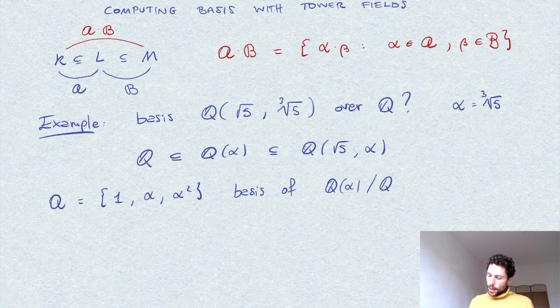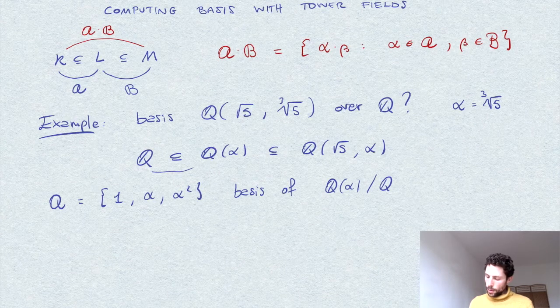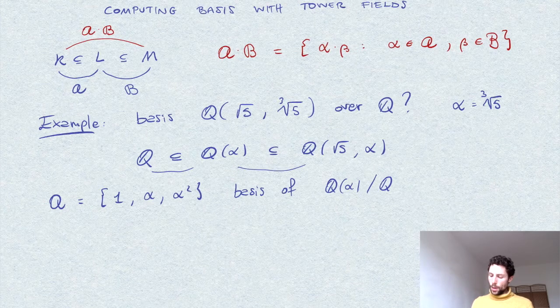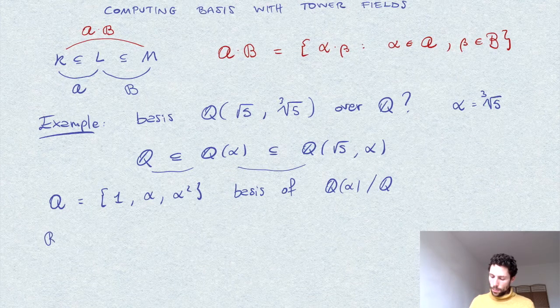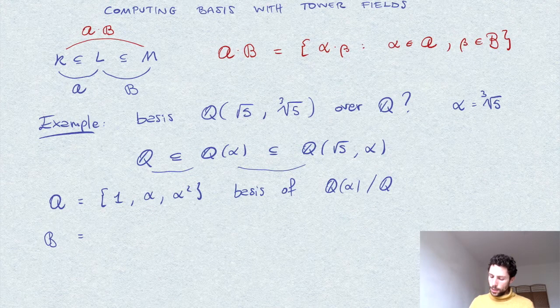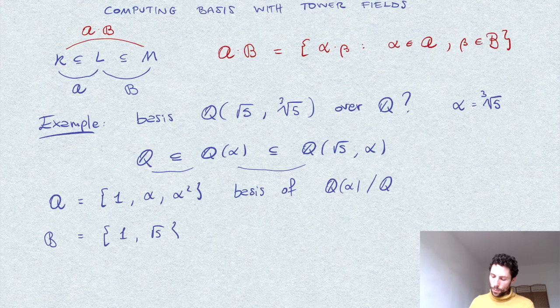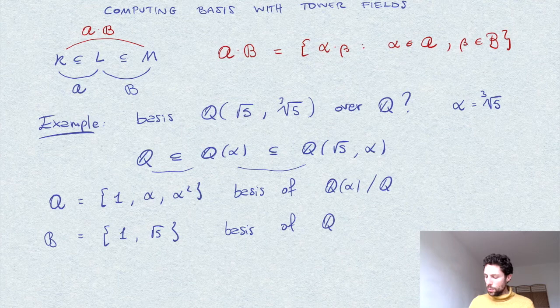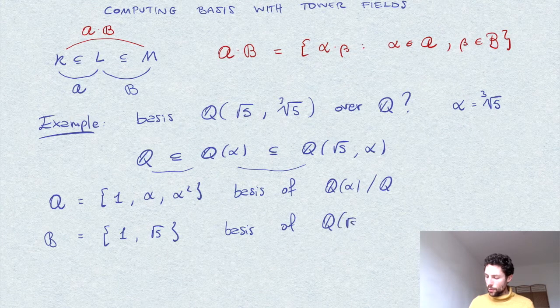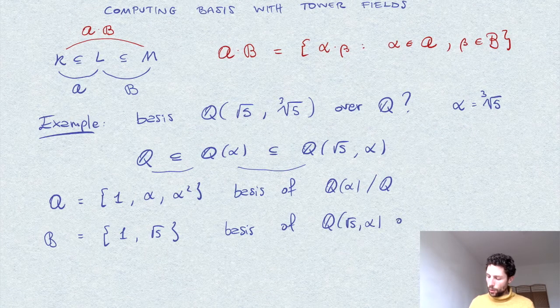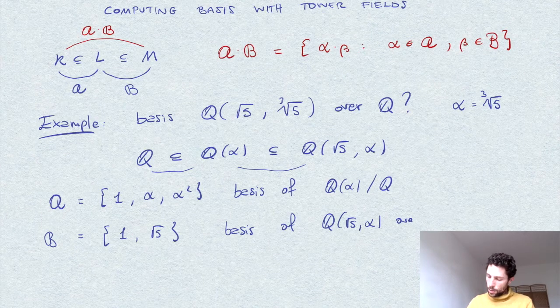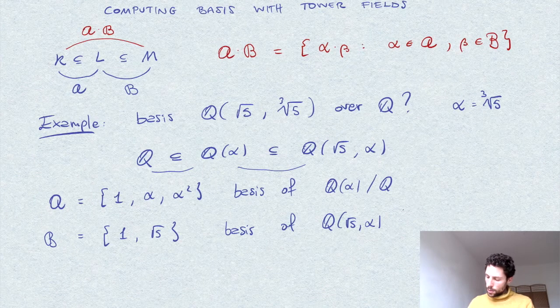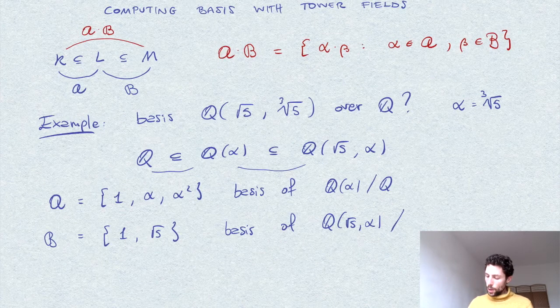Now I pass to the other extension. What is the basis of this extension? I claim that we can take the basis 1 and square root of 5 as a basis of Q of square root of 5 and alpha over Q of alpha.